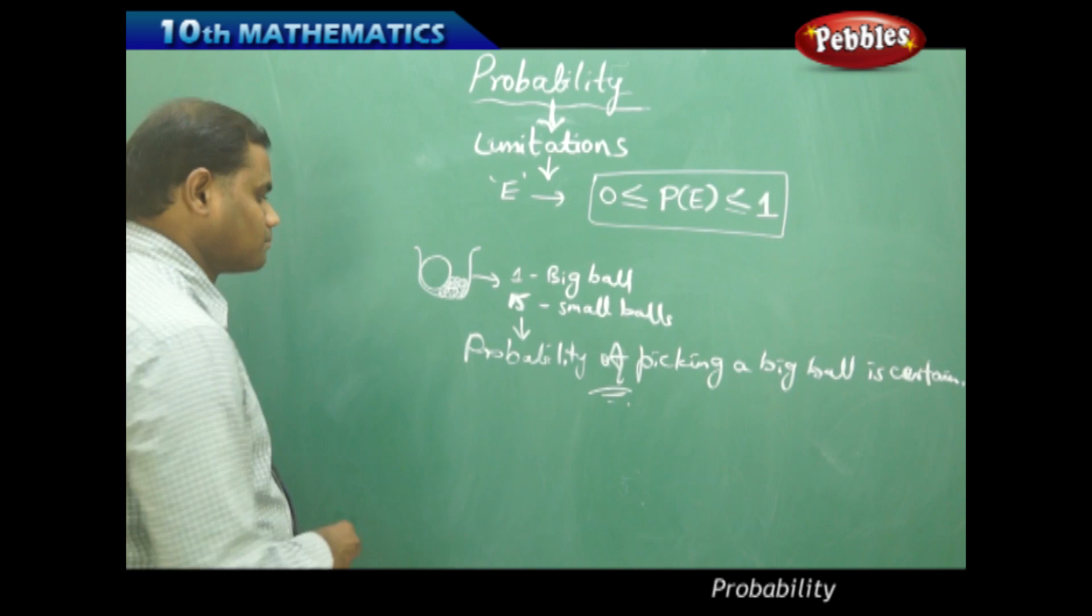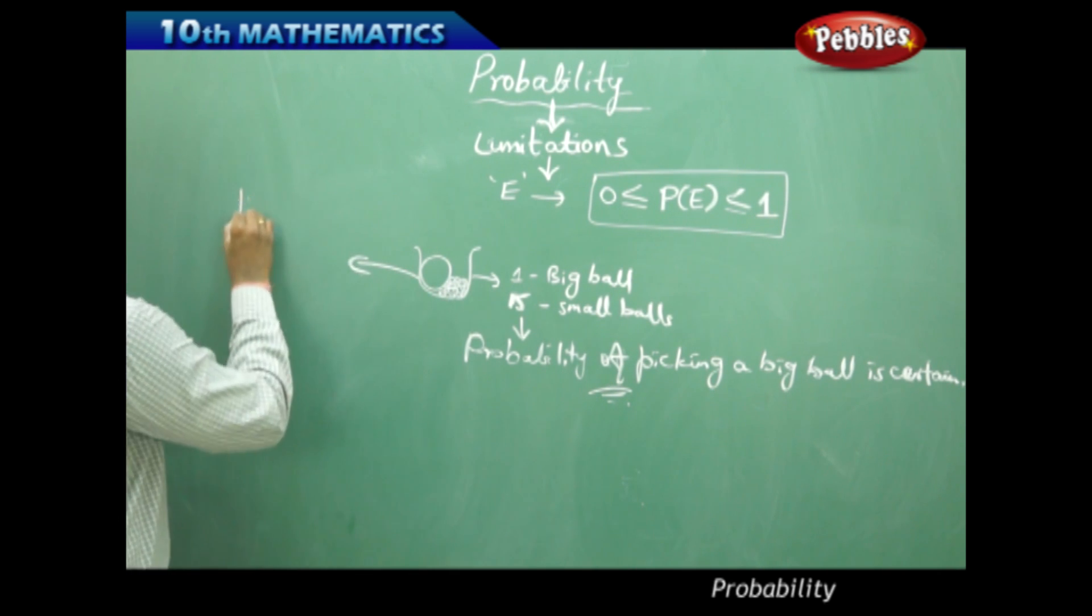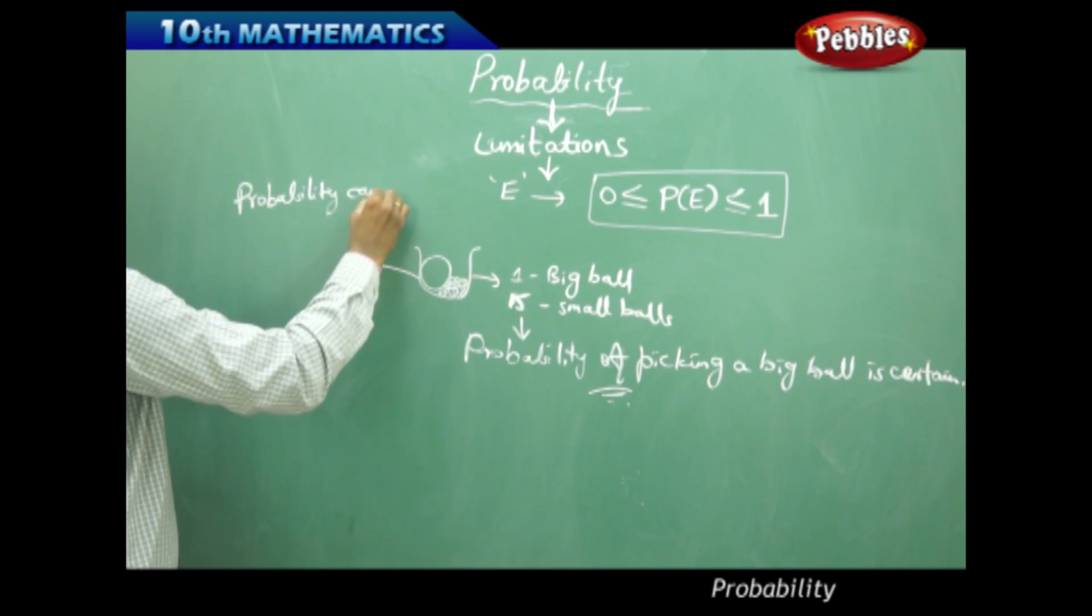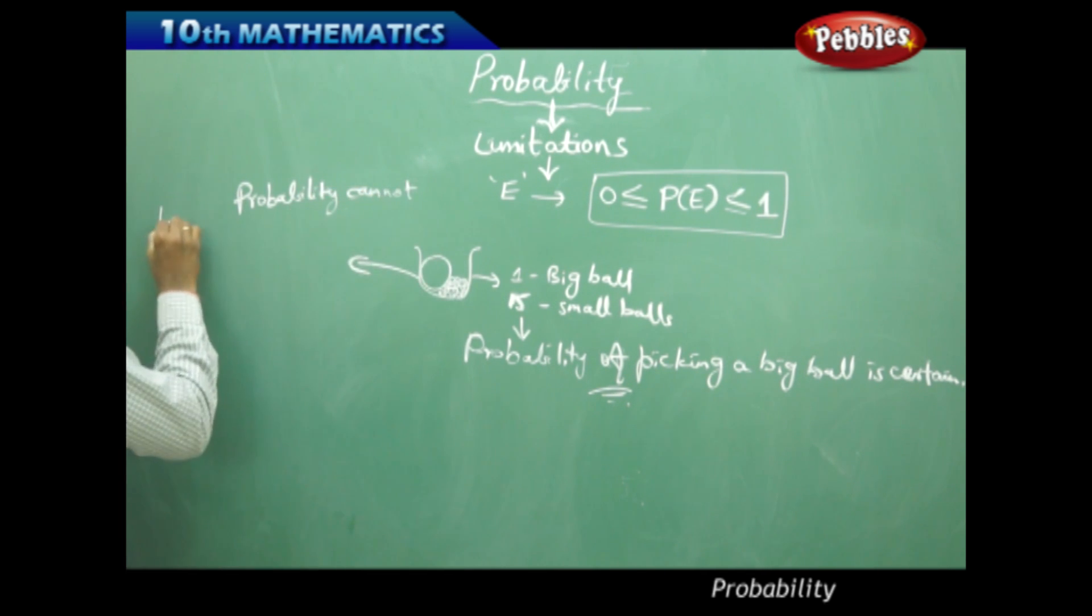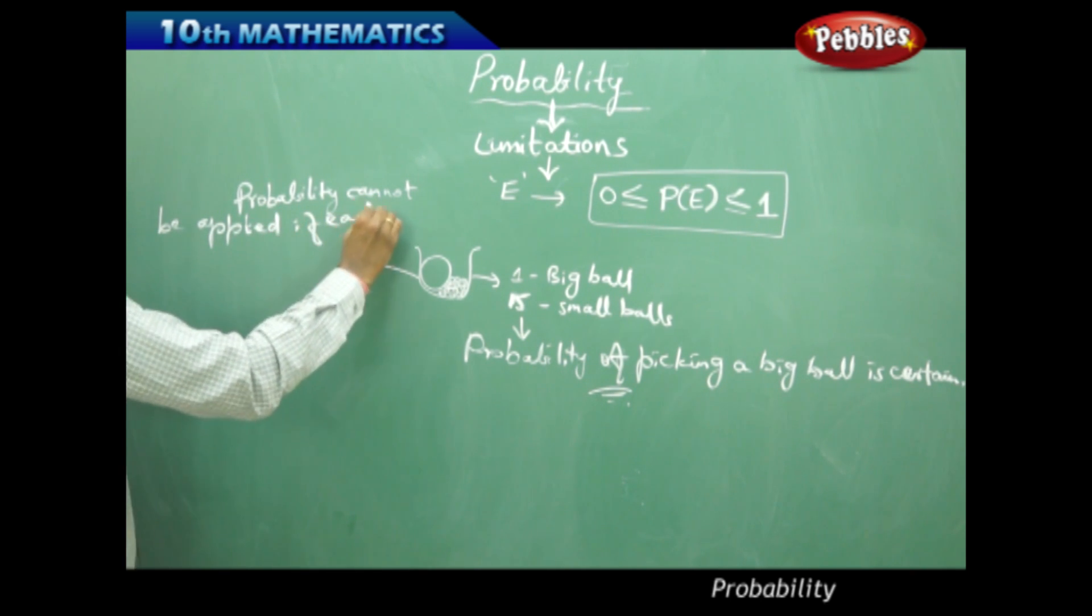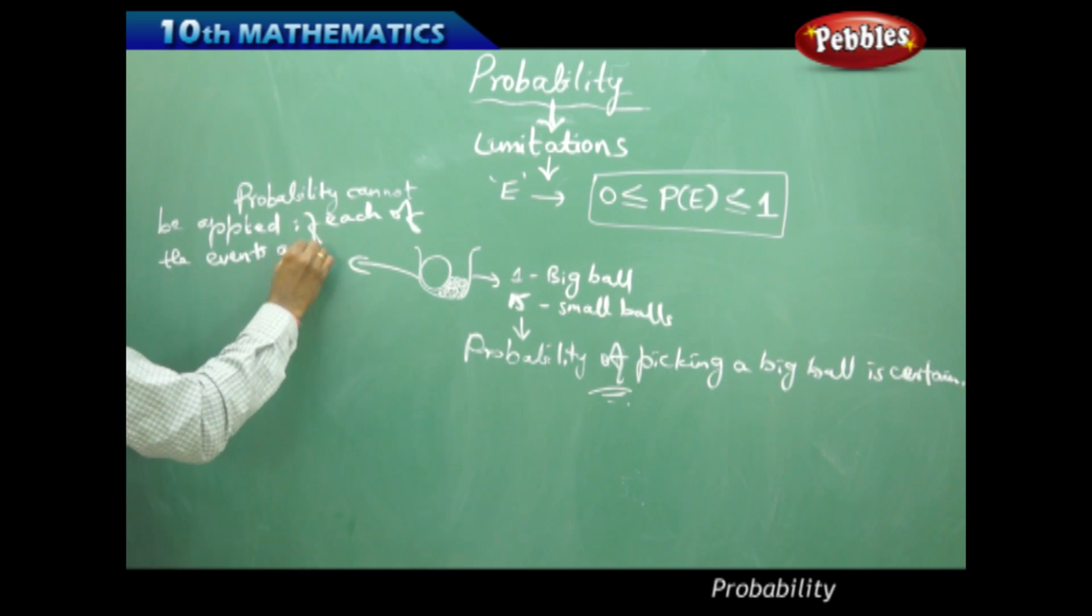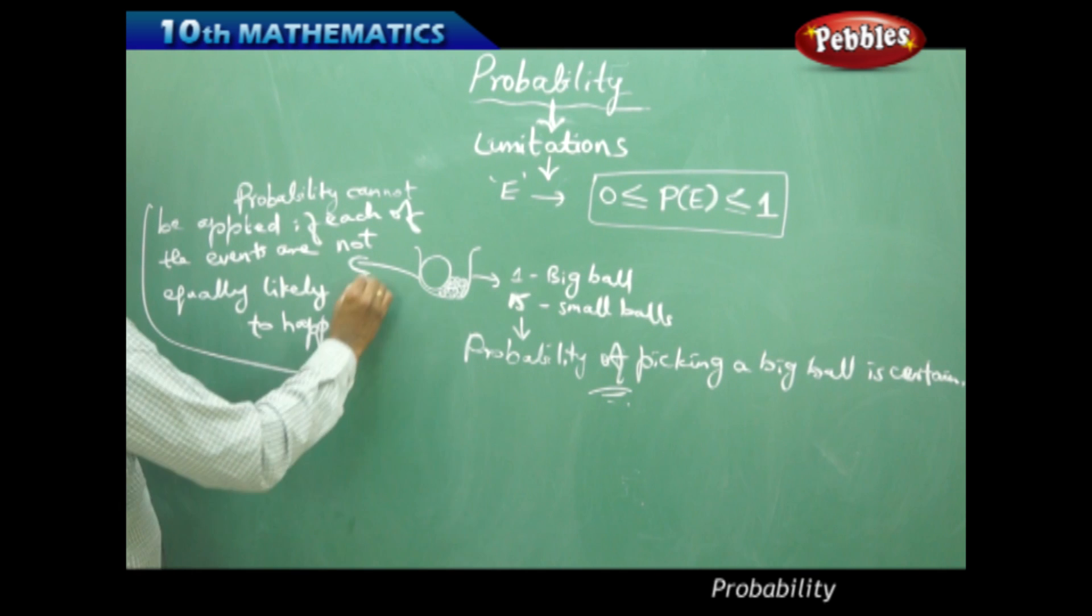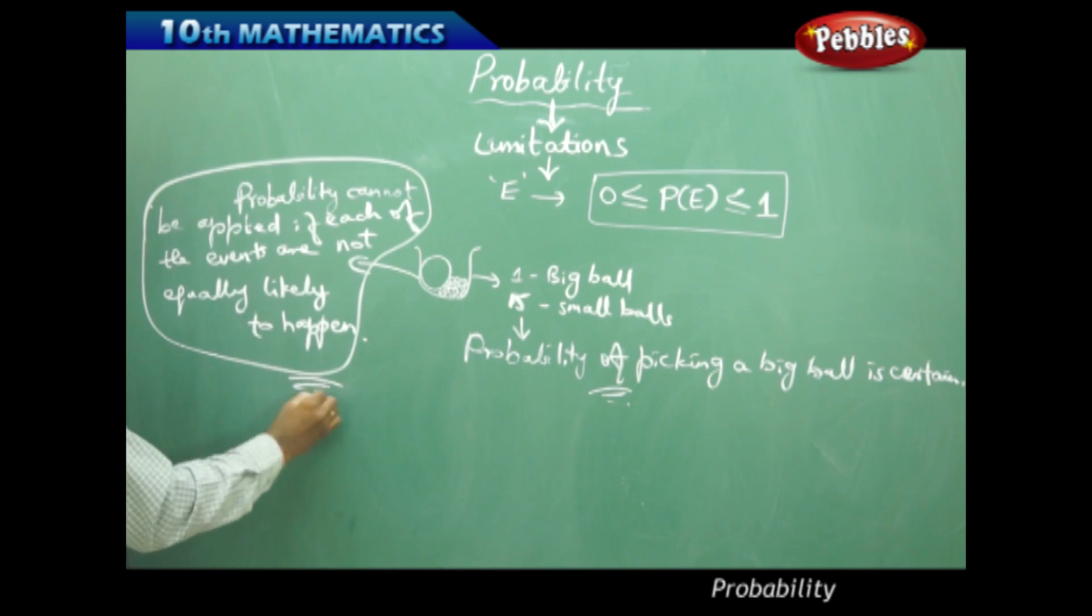Let's see what is the limitation. Probability cannot be applied to this kind of problem because probability cannot be applied if each of the events are not equally likely to happen. This is one of the biggest questions in probability and its limitations.